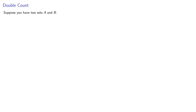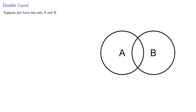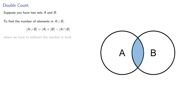Suppose you have two sets A and B. To find the number of elements in A union B, we can add the number of elements in each set. But because there might be elements included in both sets, we need to subtract the number of elements that are in both. This is an example of what's known as the inclusion-exclusion principle.